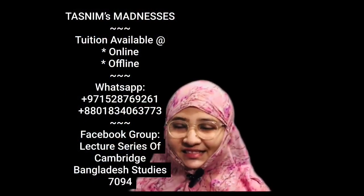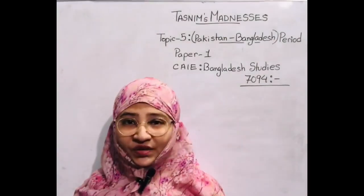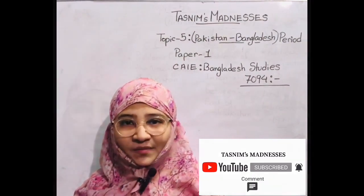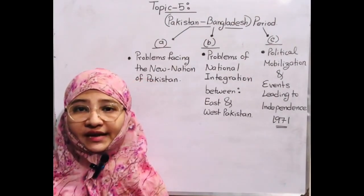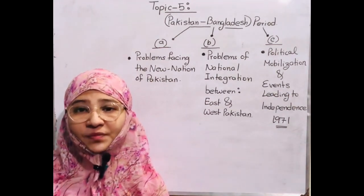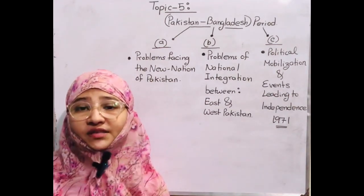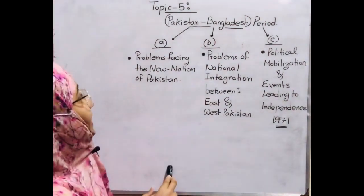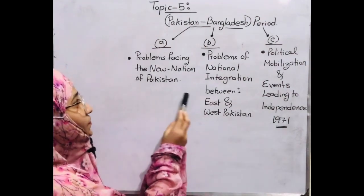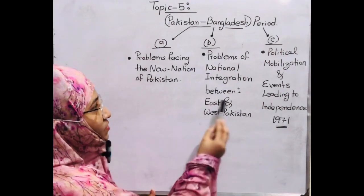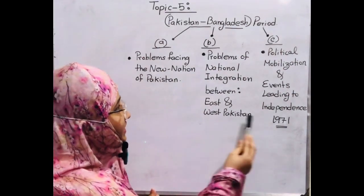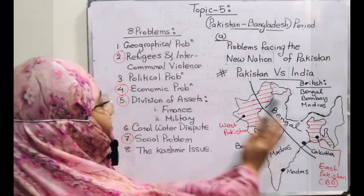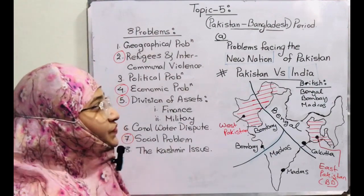Assalamu alaikum and welcome back to the channel. From today's class onwards we will be studying Topic 5, which is Pakistan to Bangladesh period of Paper 1 CAIE. Like Topic 4, I'm going to share the guidelines, the number of days, and the titles that the topic contains, so that it becomes easier for you to prepare. The topic contains three different chapters: 5a - Problems facing the new nation of Pakistan, 5b - Problems of national integration between East and West Pakistan, and 5c - Political mobilization and events leading to independence.